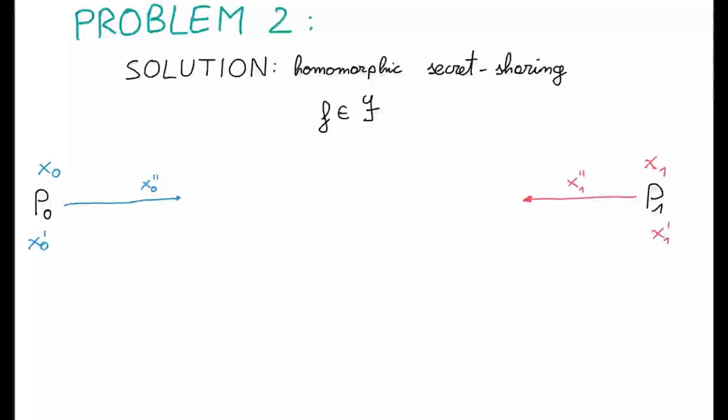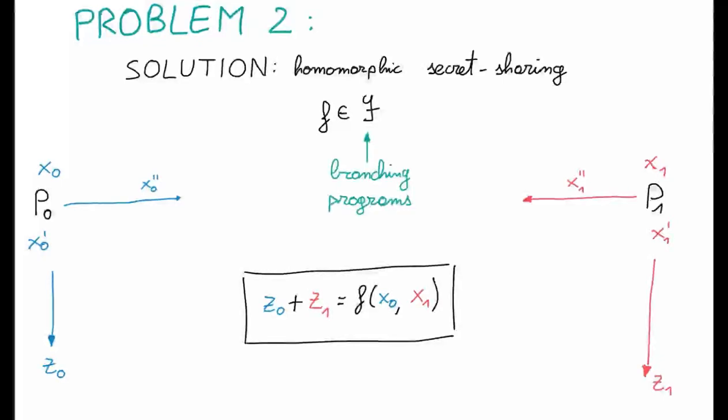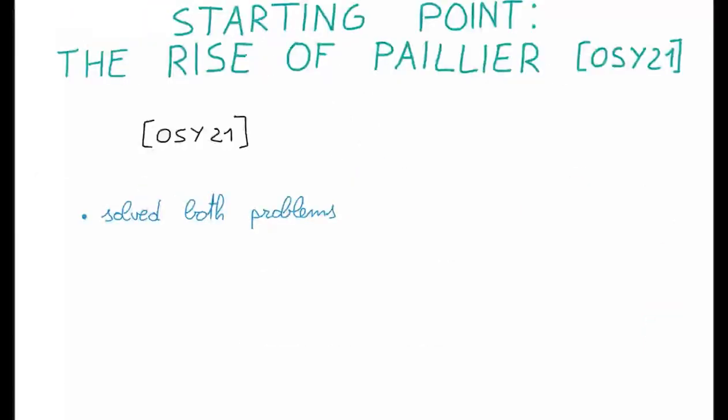It is a construction in which, in the first round, the parties secret share their inputs according to some particular secret sharing scheme. Then, using only a local computation, they can derive an additive secret sharing of the output. In our paper, we present a scheme that works for branching programs.